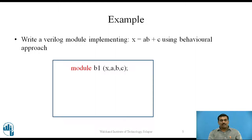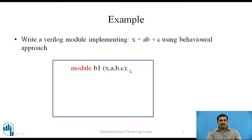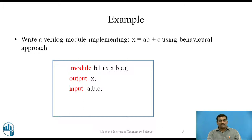We will start with the module keyword. Here the name of the module is given as b1. x is the output, and a, b, and c are the inputs — do not forget to give the semicolon at the end. The next step is to define the inputs and outputs for this circuit. Our output is x, defined as output x, and the three inputs are a, b, and c.